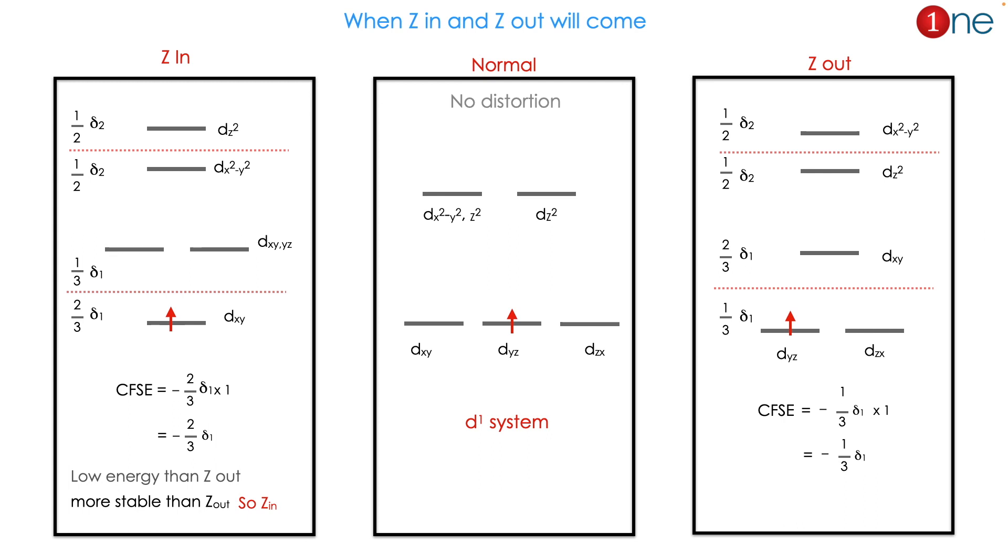You should know when Z_in and Z_out will occur. Normally the distribution will be t2g and eg, but Z_in and Z_out change the energy state. It will split into two different energy states which are Δ1 and Δ2. Here I've given the d¹ system, which is the normal octahedral one.